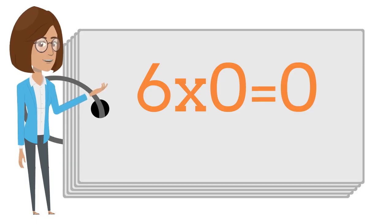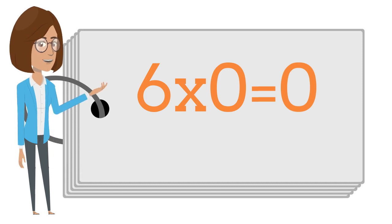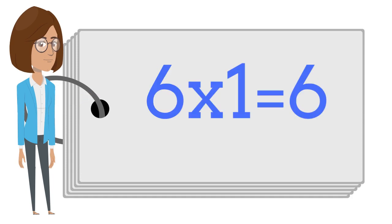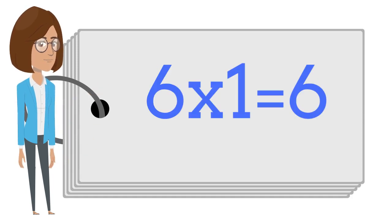Six times zero is zero. Six times one is six.